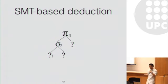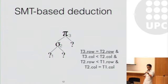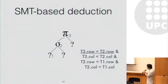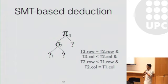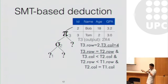Essentially, what we do is conjoin all the component specifications involved in the current hypothesis and perform necessary variable renaming. We get the following SMT formula, which represents the specification of the current partial program. In addition, we also have the constraint from the output table provided by the user — the constraint says that the output table T3 should contain two rows and four columns.